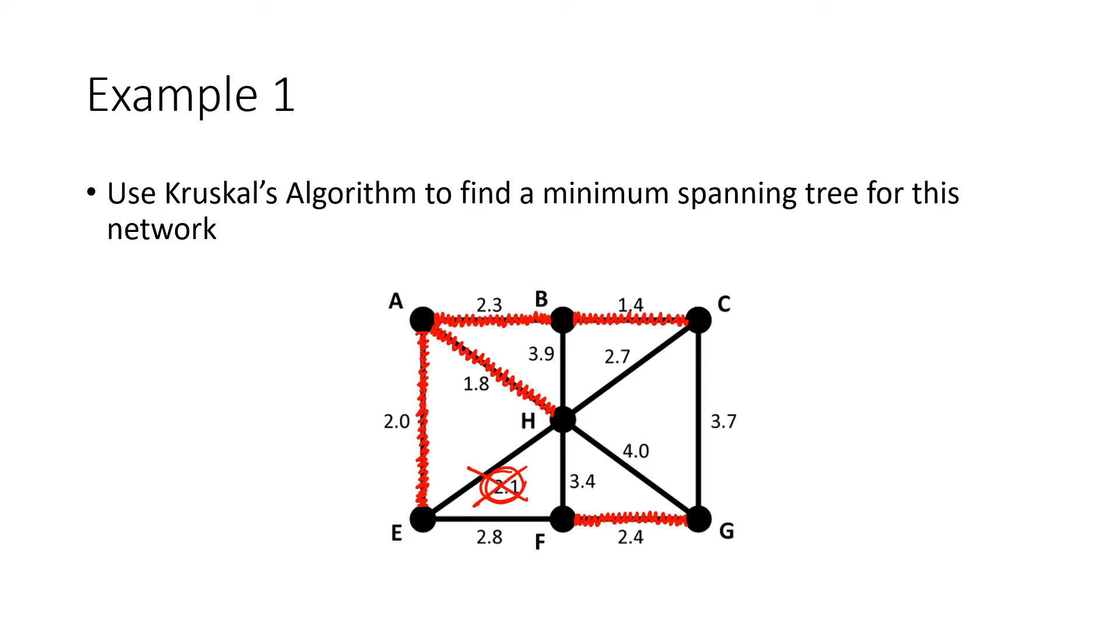The next lowest number is 2.7, but that would create a circuit connecting vertices A, B, C, and H, so I'll cross that out. Next up is 2.8 connecting E to F, which doesn't create any circuits, so I'll add that to my graph, and now I'm done.